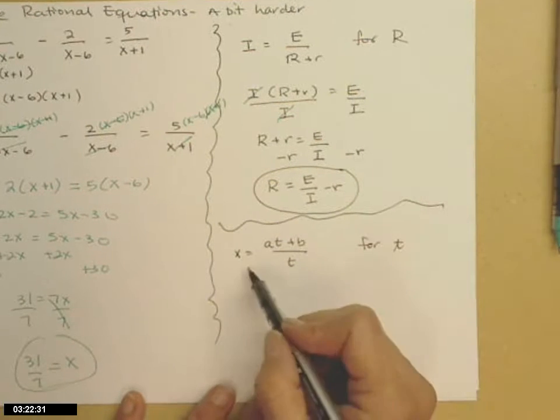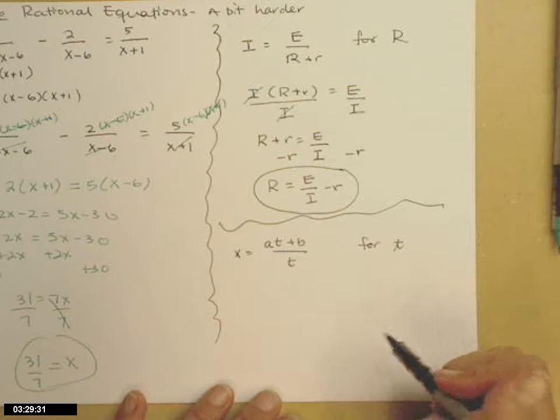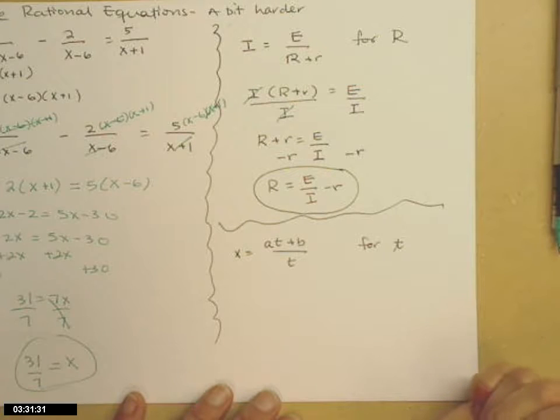Last example, x equals a times t plus b all over t. This time I need to solve for t. Again, t is in the bottom, so I need to get that out of the denominator before I can go forward.